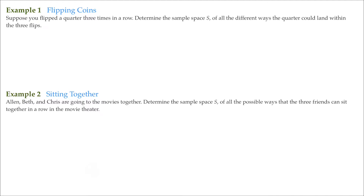As we get into these two examples here, we're going to be describing sample spaces. As you can see right here, we have a sample space S, and we have another one right here. A sample space, for lack of a better term, is nothing more than a list of all the possible outcomes that can occur in some sort of probability experiment. A probability experiment is where you conduct an experiment over and over to determine the likelihood of some sort of event occurring.